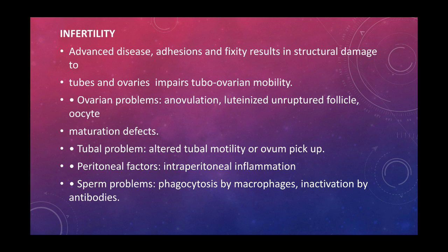Infertility is also a very important feature of endometriosis. In advanced disease, there are adhesions and fixity which result in structural damage to the tubes and ovaries and impaired tubo-ovarian mobility. Ovarian problems may also cause impaired phagocytosis, ovulation defects, luteinized unruptured follicle syndrome, and tubal problems like altered tubal motility and ovum pickup. Peritoneal factors include intraperitoneal inflammation, and sperm problems may occur due to phagocytosis by macrophages and inactivation by antibodies.